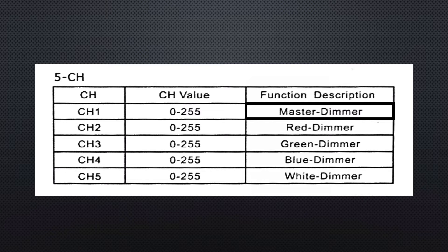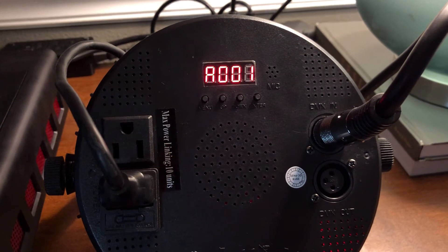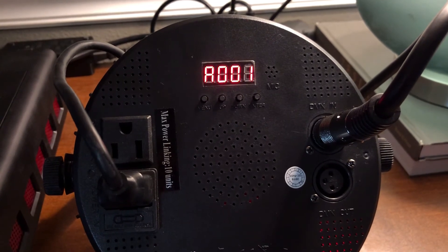The master dimmer value has a direct impact on the effect of the other four values — just like the master fader on an audio console. For example, if I leave channel 2 and channel 4 at 100% and then set channel 1 to 50%, the actual light output of the red and blue LEDs will be at 50% intensity.